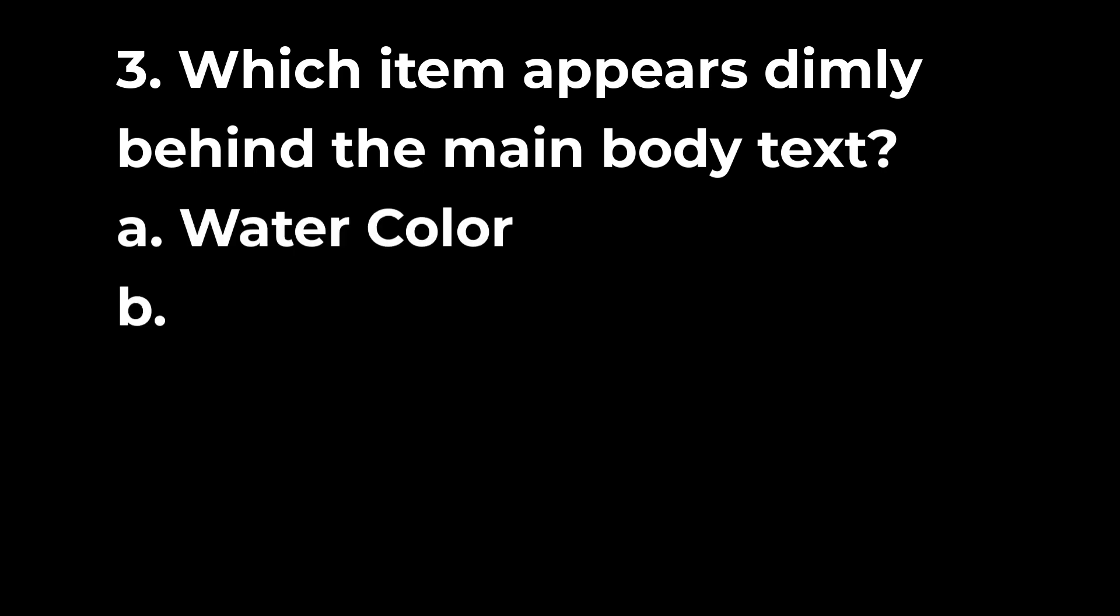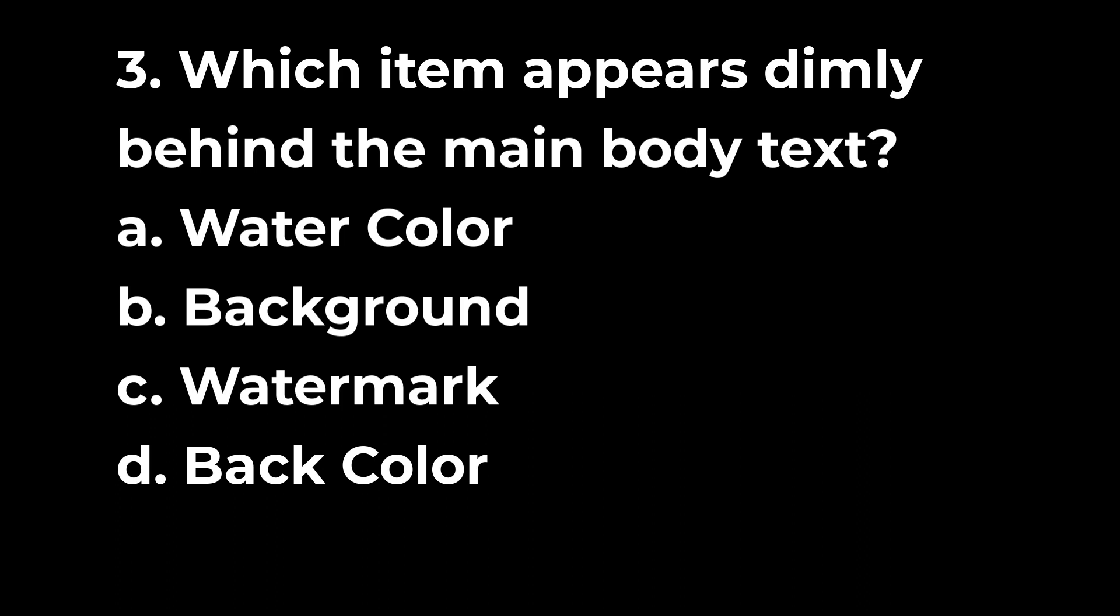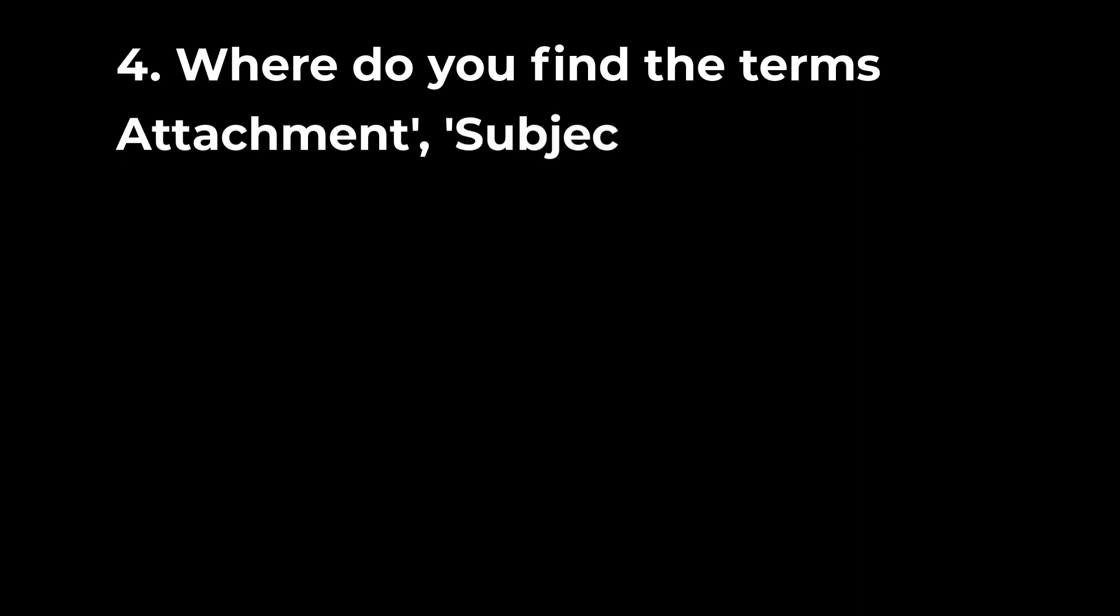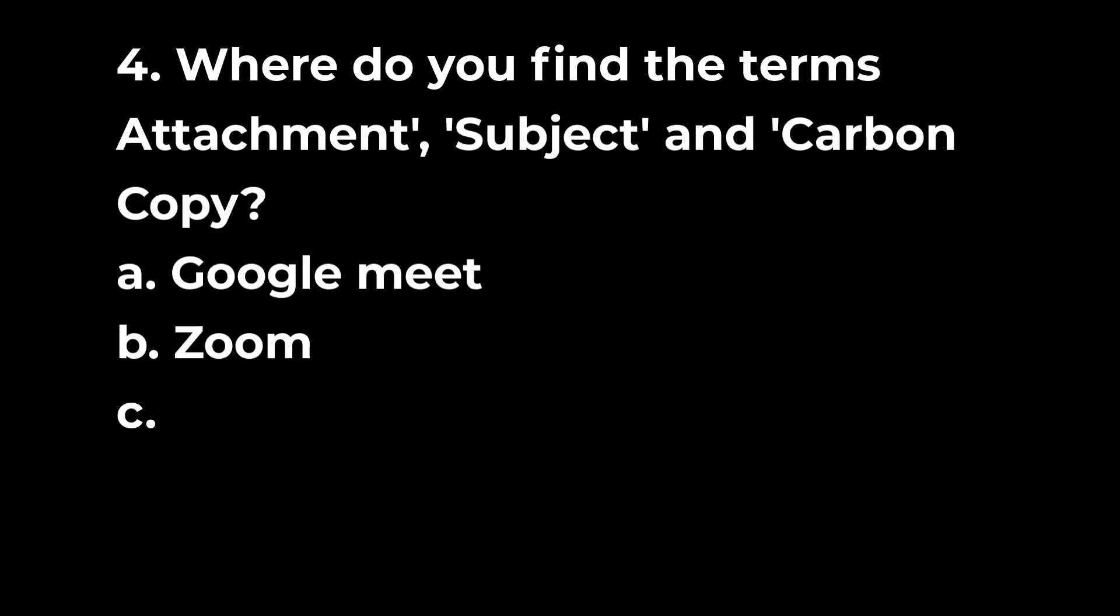Question 3: Which item appears dimly behind the main body text? a. watercolor b. background c. watermark d. back color. Question 4: Where do you find the terms attachment, subject and carbon copy? a. Google Meet b. Zoom c. Skype d. Outlook Mail.